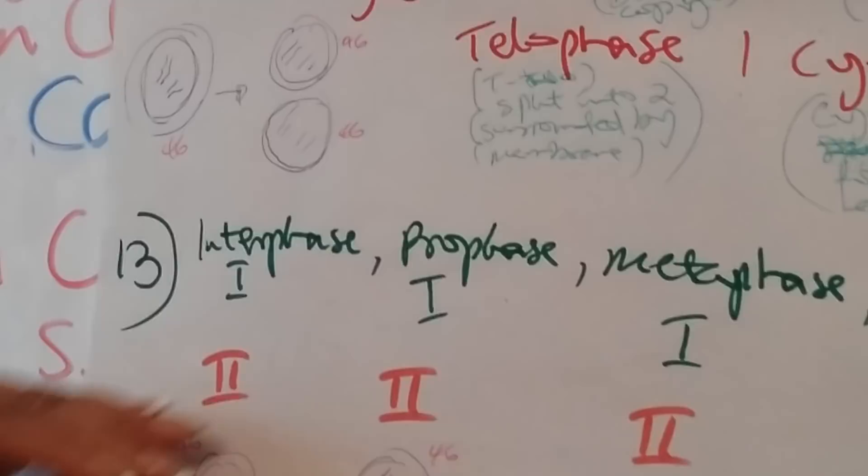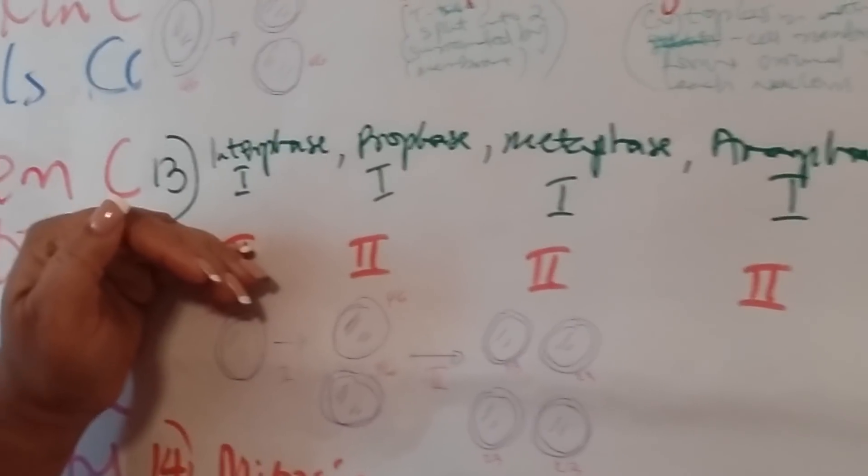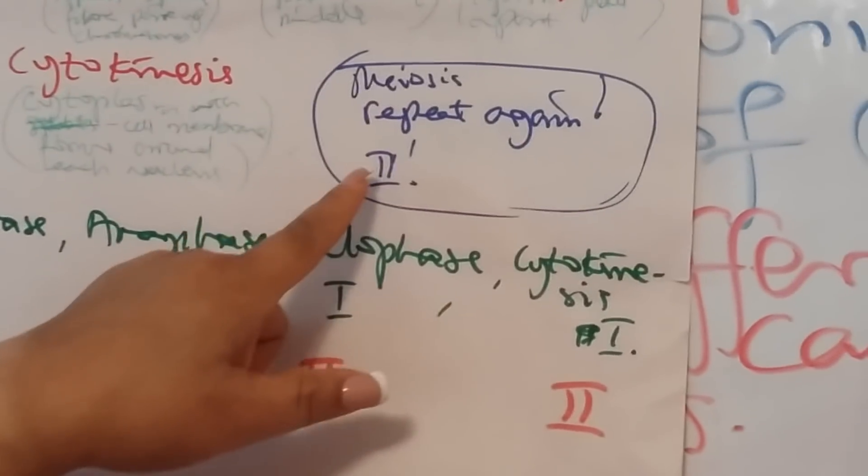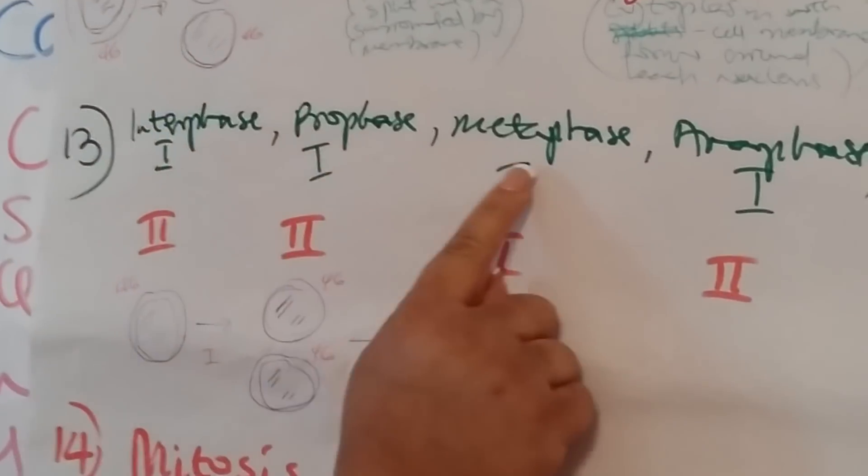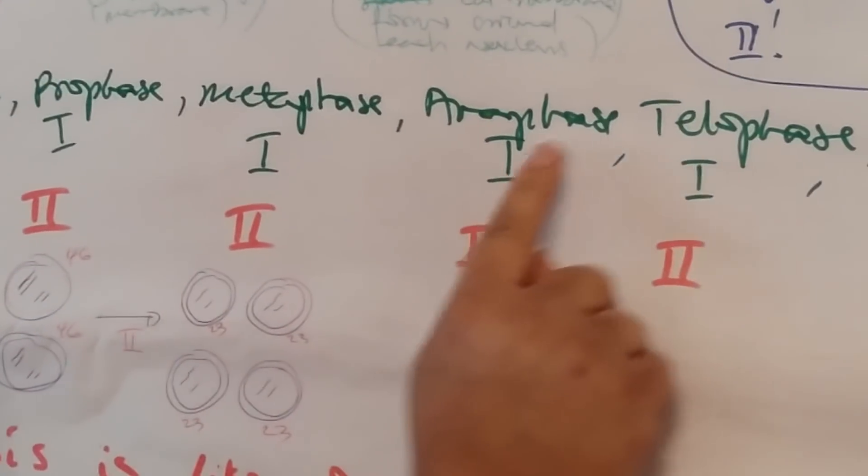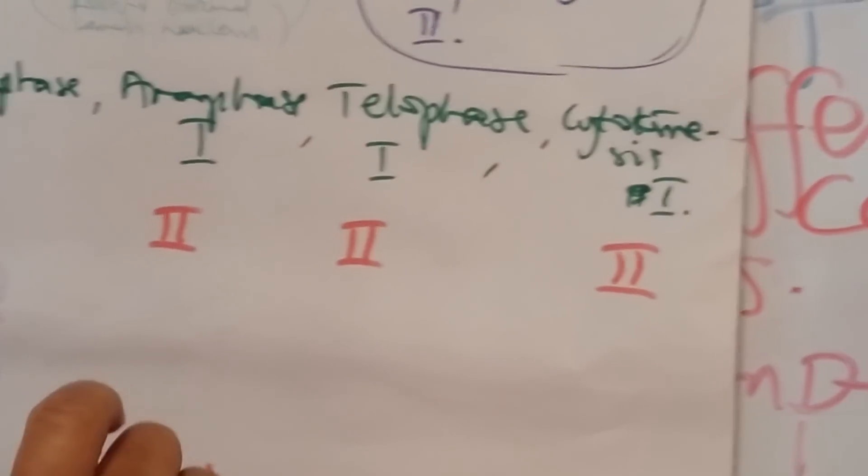The next question says to outline the stages of meiosis. Meiosis repeats again, and I put two there. That means you have interphase 1, prophase 1, metaphase 1, anaphase 1, telophase 1, cytokinesis 1.